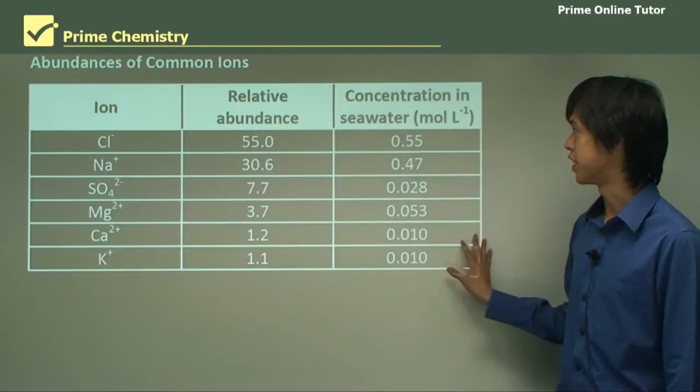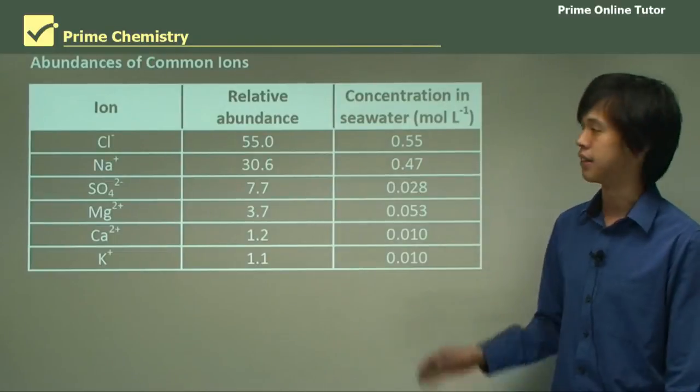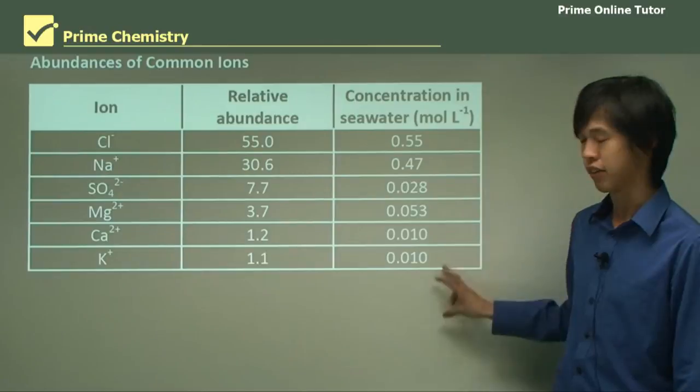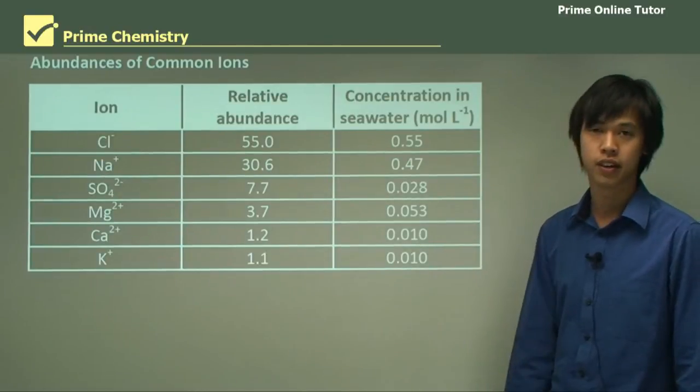You can see probably around 86% is sodium chloride and the rest is these other ions like sulfate, magnesium, calcium and potassium. Here we have the concentrations as moles per liter. You can see that it's much higher for these two compared to the rest of the ions that we find in the water.